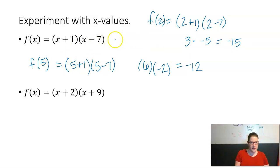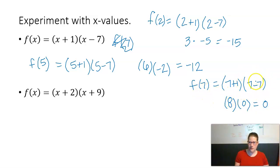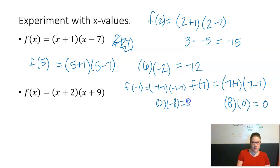Now, what happens when I choose f(7)? That would be (7+1)(7-7), or 8 times 0, which is just zero. So anytime one of my factors goes to zero, the entire product equals zero. The other value that makes this whole thing zero is x = negative 1, giving (-1+1)(-1-7), or 0 times negative 8, which is also zero.